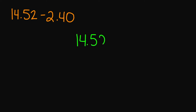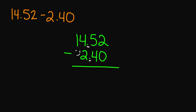For an example, if we have 14.52 minus 2.40, I'm going to go ahead and line up my decimal points and my numbers so that I can subtract. All of my numbers are lined up and my decimal point is also lined up. You can put your imaginary zero here, but you do not have to. 2 minus 0 is 2, 5 minus 4 is 1. Bring down my decimal. 4 minus 2 is 2, and then 1 minus 0 is 1. So your final answer is 12.12.